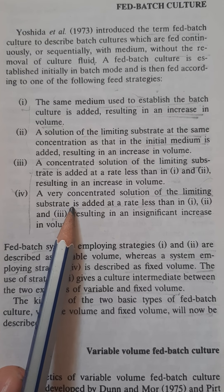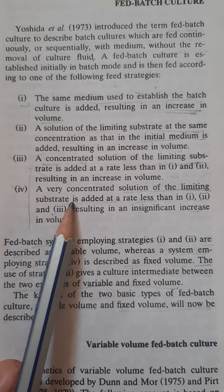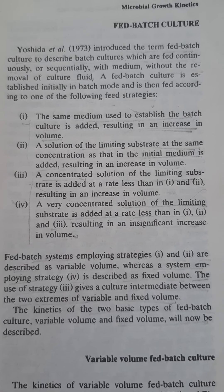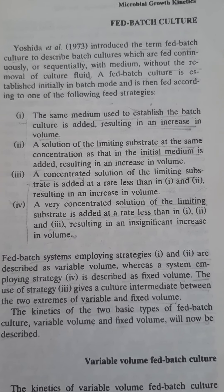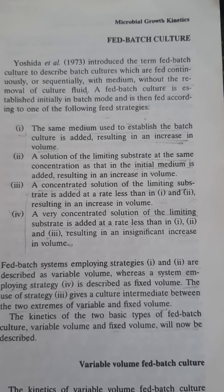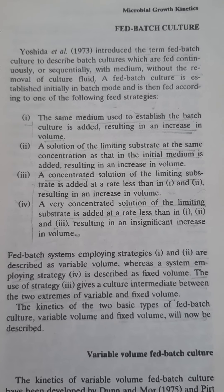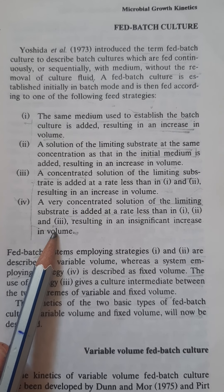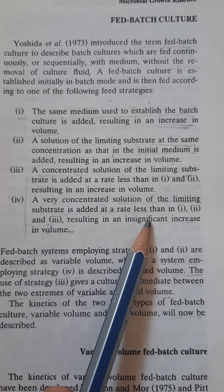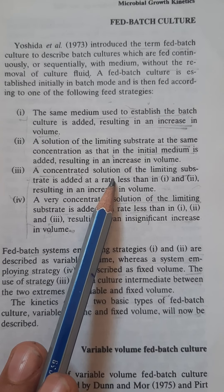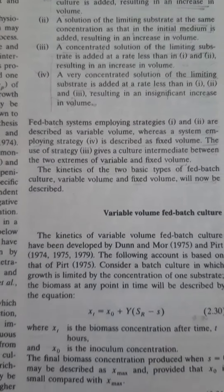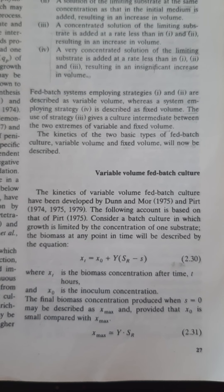The fourth strategy gives a fixed volume fed-batch system because it uses a highly concentrated solution, meaning the overall volume does not significantly change. So the first two strategies result in variable volume, the fourth in fixed volume, and the third is the intermediate state between fixed and variable. What is the variable volume fed-batch culture?